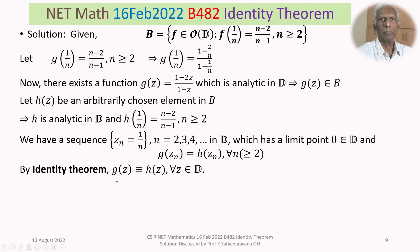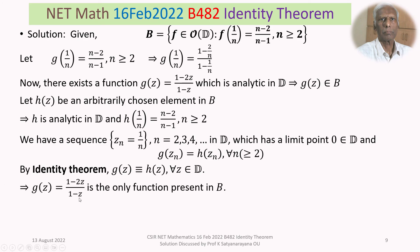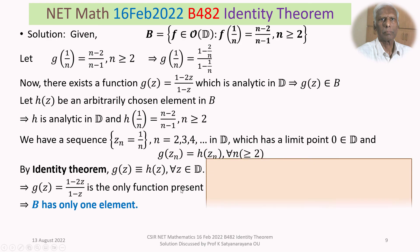Therefore by the Identity Theorem, G of Z is identically equal to H of Z for all Z in D. Since H was any arbitrarily chosen element of B, every element of B equals G of Z. That means B has only one function: G of Z equals (1 minus 2Z) divided by (1 minus Z). So B is a singleton set with exactly one element.